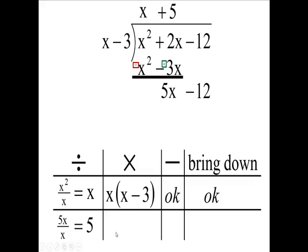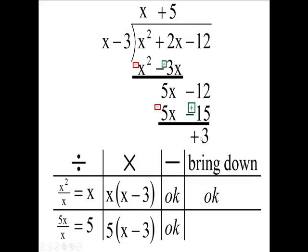That 5, we're going to take times this binomial here. That's going to give me 5 times x is 5x, and 5 times minus 3 is minus 15. Then when we change the signs, this is going to be a minus and this is going to be a plus. I have minus 12 and plus 15, which gives you a positive 3.